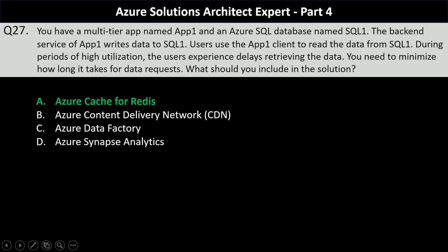Let's understand why other options are incorrect. Azure Content Delivery Network is used for delivering static content such as images or videos from globally distributed servers — it is not designed for improving performance of database-driven applications. Azure Data Factory is a data integration service that automates data movement and transformation, not relevant for caching or minimizing database query response times. Azure Synapse Analytics is designed for large-scale data analysis and business intelligence (OLAP), not suited for low latency, high-speed transactional data access (OLTP).